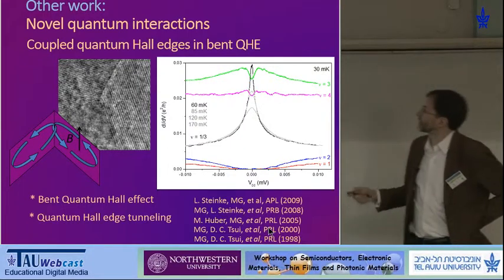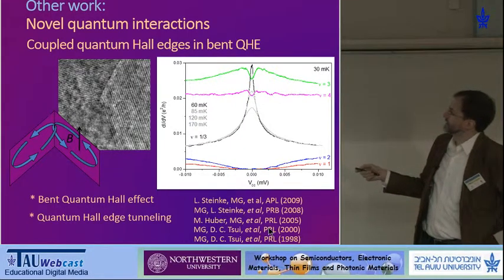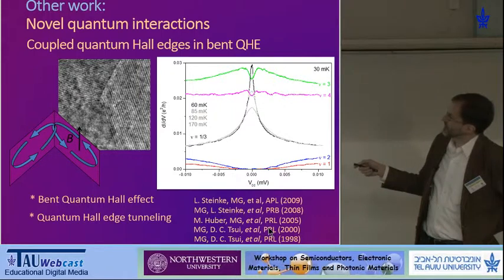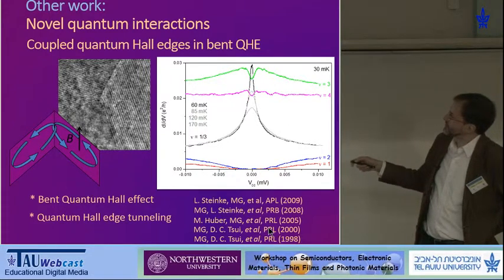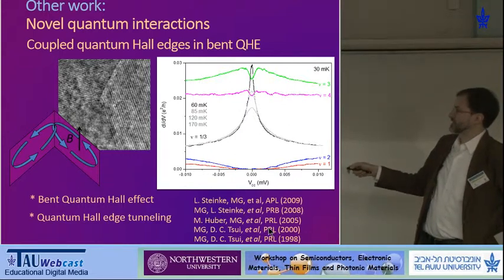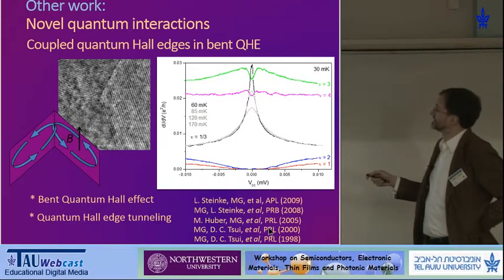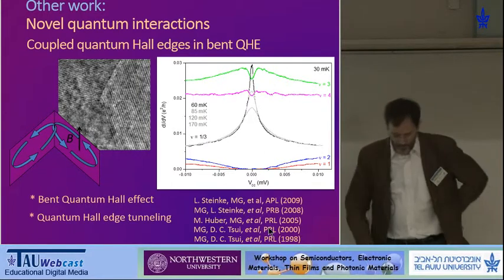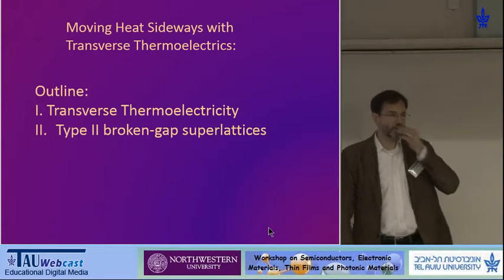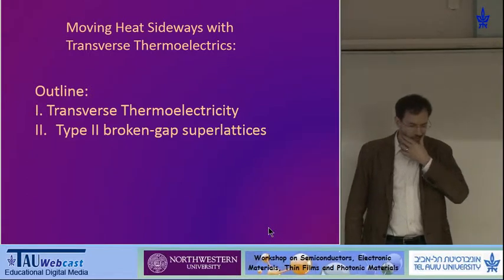Other things that I work on are quantum systems. For example, we have coupled quantum Hall edges. This is a TEM picture of what we call a bent quantum Hall effect junction — a superlattice grown with an L shape. When we apply doping to this structure, you can induce a two-dimensional electron system over the corner. In a magnetic field, you get counterpropagating edge states, and we observe Luttinger liquid physics in counterpropagating edge states of the quantum Hall effect.